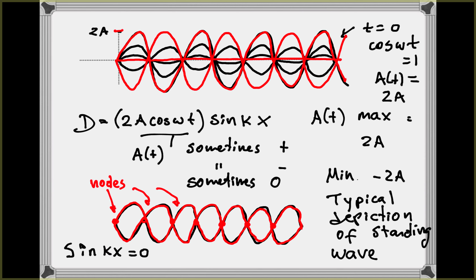The points where the displacement of the medium is always zero are called nodes. They occur on the x-axis where sine(kx) = 0: at kx = 0 (x = 0), kx = π (x = π/k), 2π, 3π, and so on. At those locations, sine(kx) is exactly zero regardless of what cos(ωt) is doing, so those points never move.